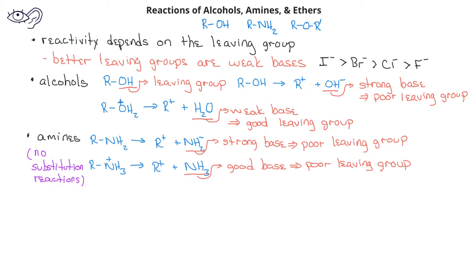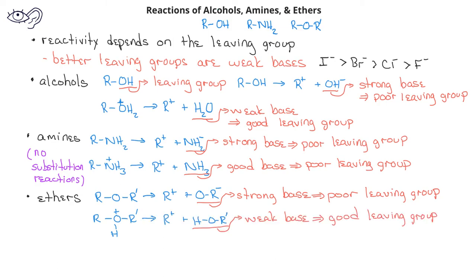When we look at ethers, we see that the alkoxide group, or OR minus, would be a strong base, so it would be a poor leaving group. However, as with alcohols, if we first protonated the oxygen to have a protonated ether, the leaving group would be essentially an alcohol. And since alcohols are weak bases, this would be a better leaving group.